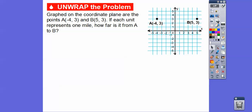Graphed here are the points A, which is at negative 4, 3, and B, which is at 5, 3. See how they're on this horizontal line right here? Notice how they have the same y-coordinates. So if they're on the horizontal line, they have the same y-coordinate. If each unit represents one mile, how far apart is it from A to B?